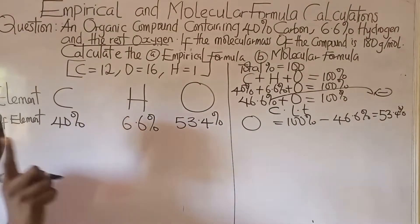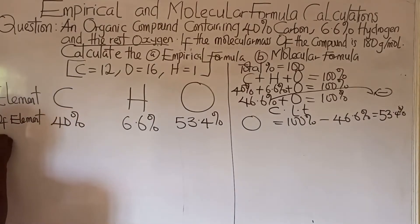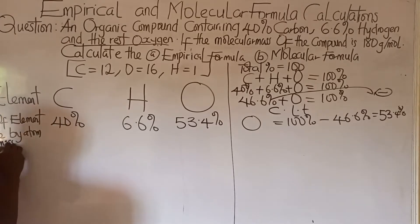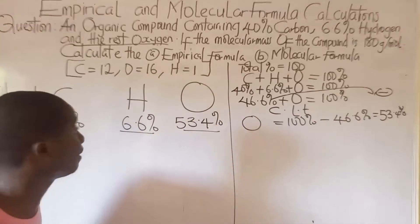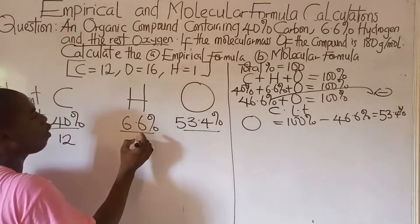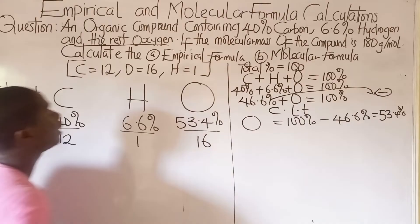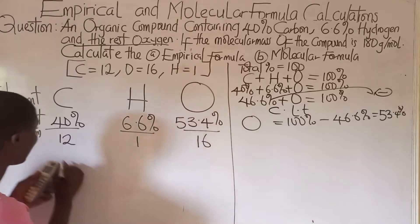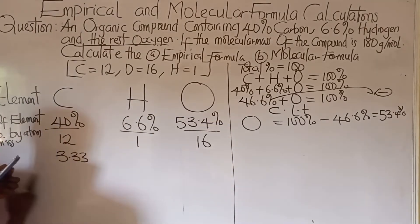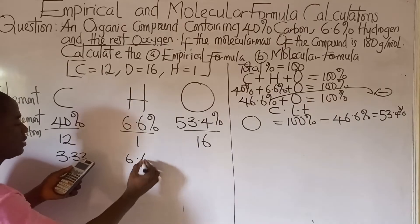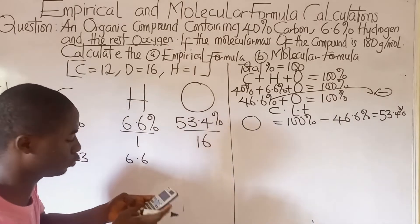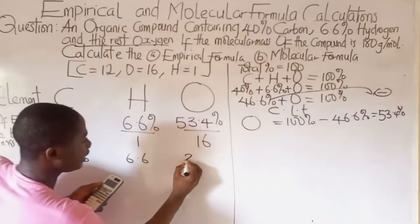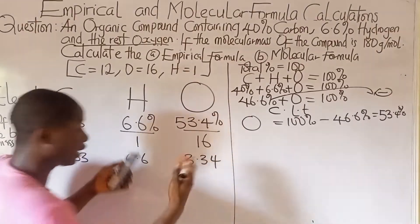The next step is to divide by the atomic masses. The atomic masses given are: carbon = 12, hydrogen = 1, oxygen = 16. Dividing: carbon gives 40 ÷ 12 = 3.3, hydrogen gives 6.6 ÷ 1 = 6.6, and oxygen gives 53.4 ÷ 16 = 3.34. These are the mole values.